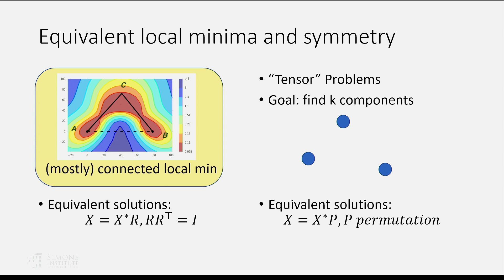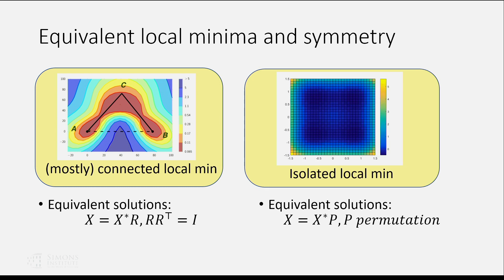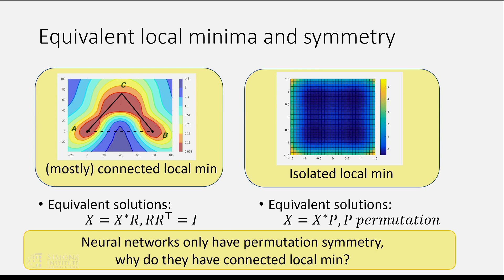These two problem types have very different symmetry. Because the set of orthonormal matrices is mostly connected, I always had the intuition that matrix problems would have mostly connected local minima. On the other hand, because permutations are very discrete objects, I always thought that tensor problems — including neural networks — would have isolated local minima, quite different from the connected local minima seen for neural networks in practice.